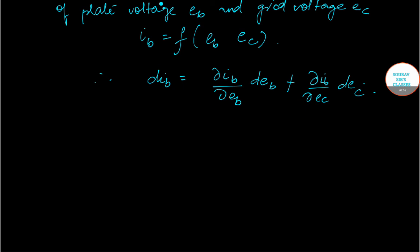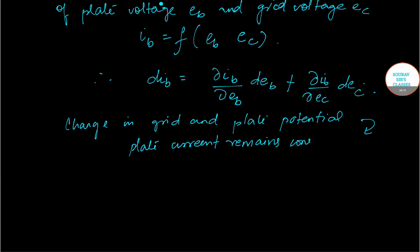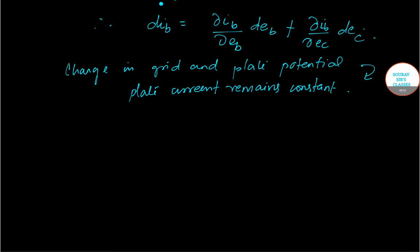Now you must remember that when the change in grid potential and plate potential are such that plate current remains constant, DIB will be equal to zero. Therefore, del IB by del EB into DEB plus del IB by del EC into DEC will be equal to zero.